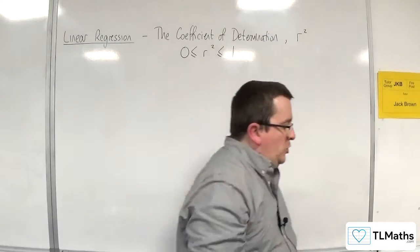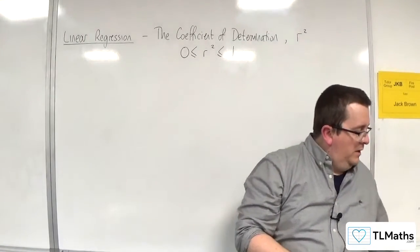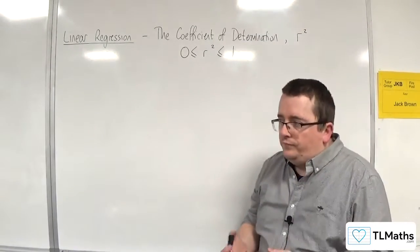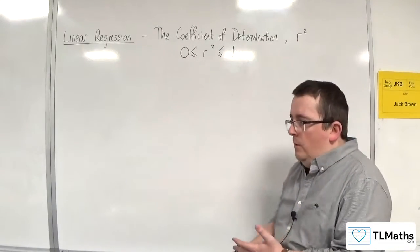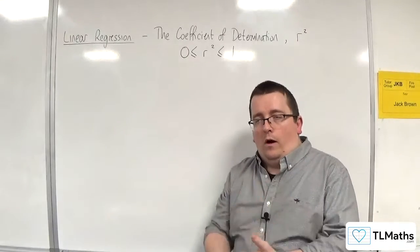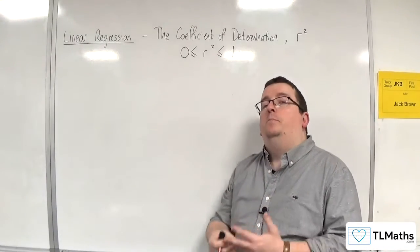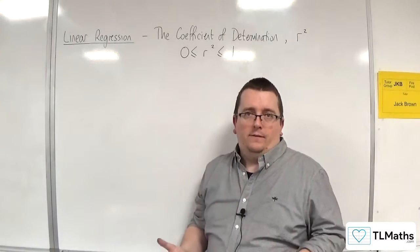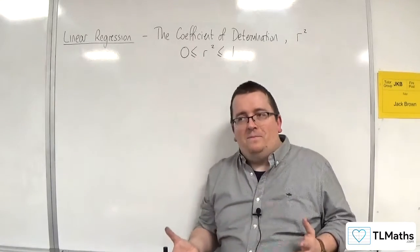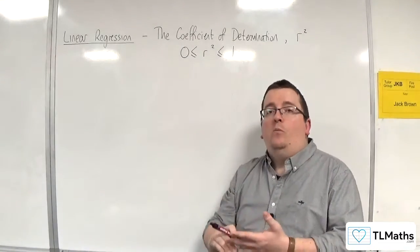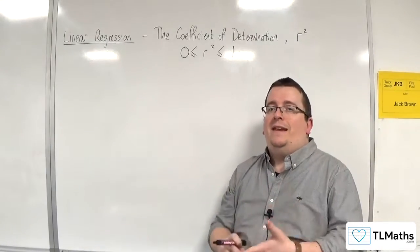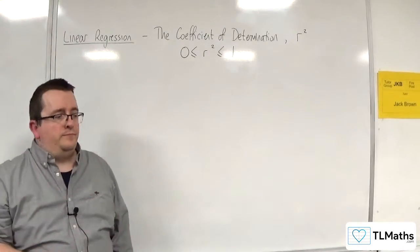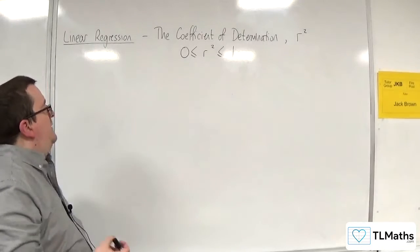Now the question becomes, okay, so we can square the PMCC, but what does it mean? Well, it tells us the proportion of the variation in Y that is explained by the variation in X. Now what does that mean? Because that's quite a complicated thing to say. The best way to explain this is to do it via an example.